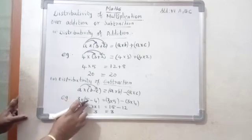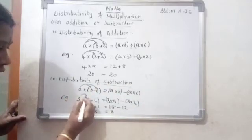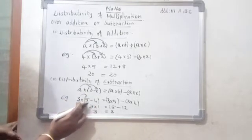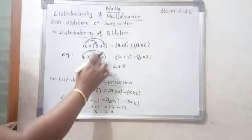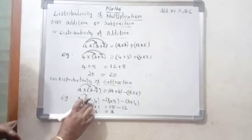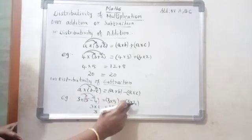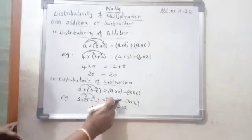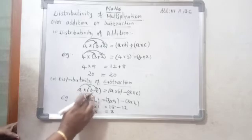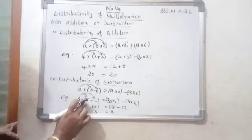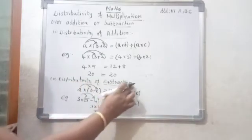Give an example: 3 into 5 minus 4. How do we write the expanded form? First product number: 3 into 5. Sign is minus. Next, another product number: 3 into 4. So 3 fives are 15, 3 fours are 12. Check it: 5 minus 4 equals 1, so 3 into 1 equals 3. And 15 minus 12 equals 3. So the distributive property of subtraction is true.